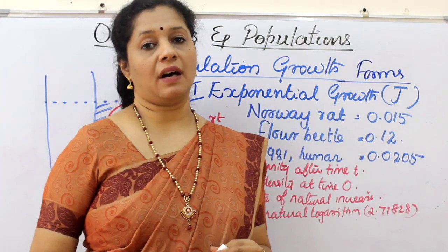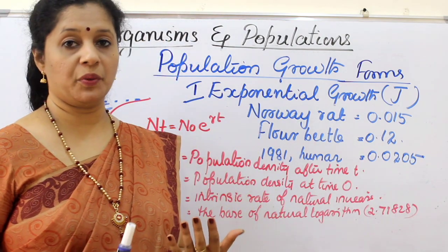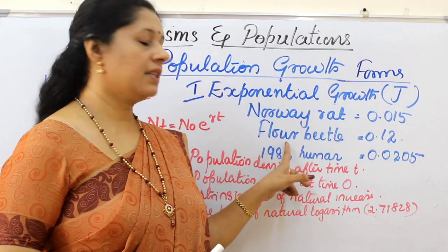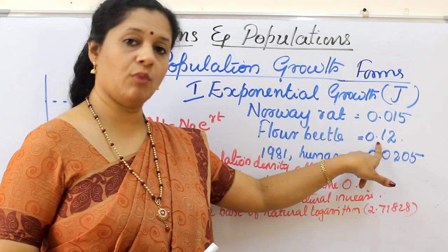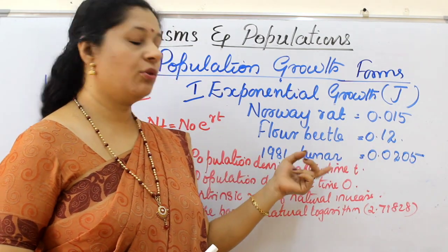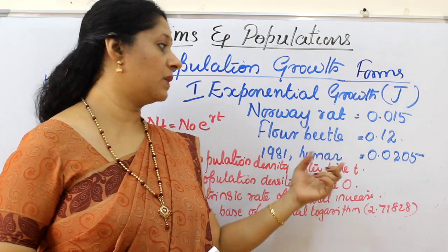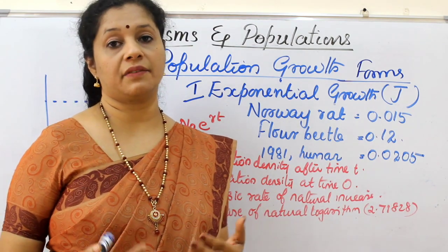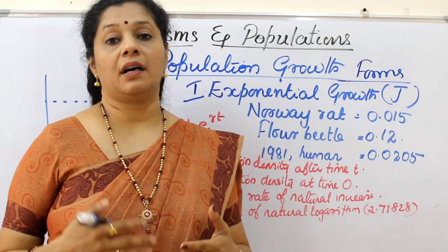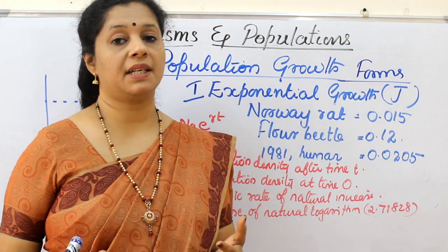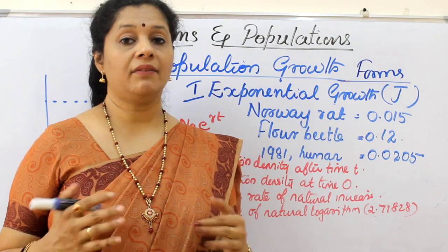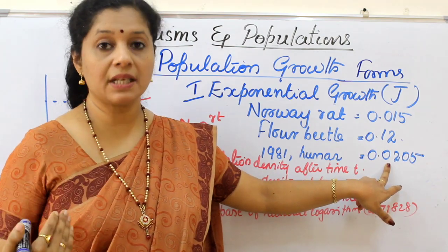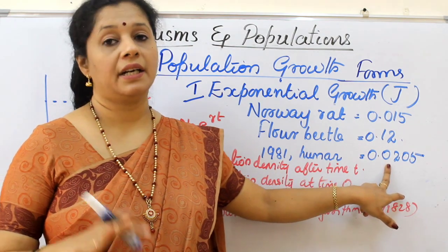When we compare r values for different populations, we can see how they differ. For example, in the Norway rat the r value is 0.015, whereas in the flour beetle it is 0.12 — much higher. In 1981, the human r value for India was 0.0205. If we calculate the recent r value using data after the 2011 census, using per capita birth and per capita death, we can determine whether the population is increasing or decreasing. If the r value is positive, population is increasing; if r is lower or negative, population density is decreasing.